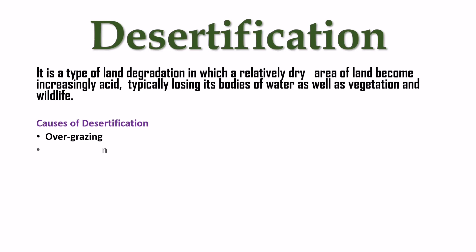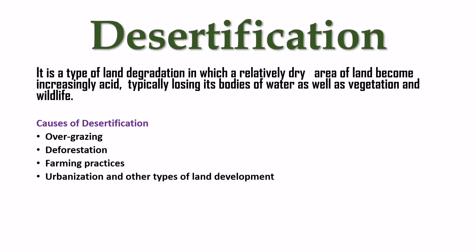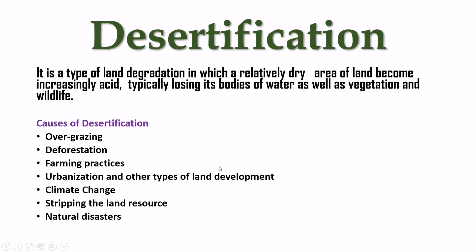Causes of desertification include overgrazing — like cows overgrazing land — deforestation and cutting of plants, farming practices, urbanization and other types of land development, climate change and extreme weather like heavy rainfall, stripping of land resources, and natural disasters like floods.